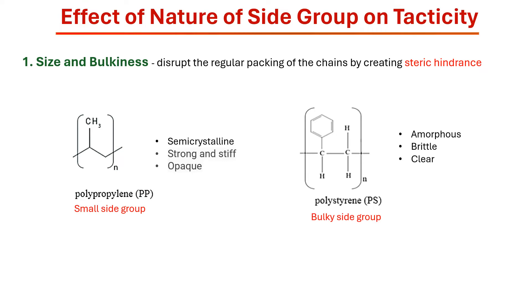If the side group is big and bulky, it creates steric hindrance which can disrupt the regular packing of polymeric chains, often leading to an atactic structure where there is no regular pattern.